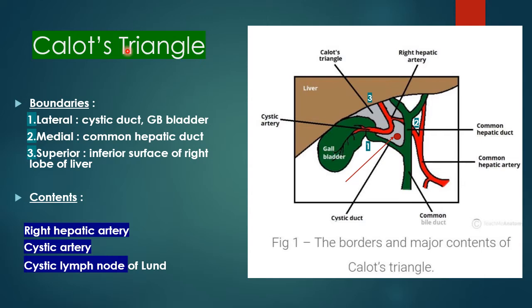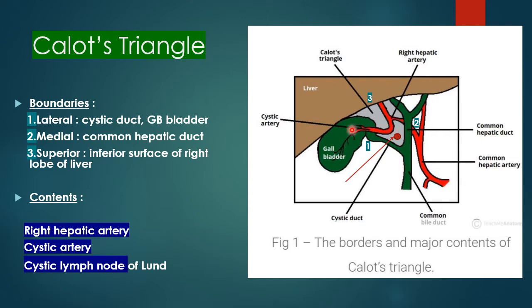The Calot's triangle is the gray shaded area in the region of the gallbladder and bile duct. Its boundaries are: lateral border — the cystic duct and gallbladder; medial border — the common hepatic duct and its branch, the right hepatic duct; superior border — the inferior surface of the right lobe of the liver. The contents of the hepatocystic triangle include the right hepatic artery and its branch, the cystic artery, which supplies the gallbladder. There is also a lymph node — the cystic lymph node of Lund — which is the primary lymph node draining the gallbladder.